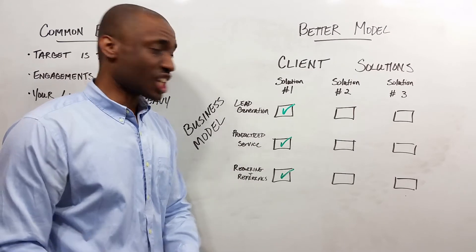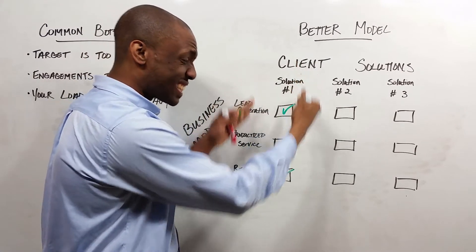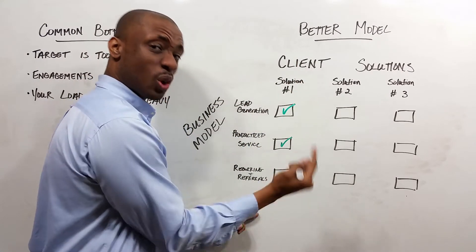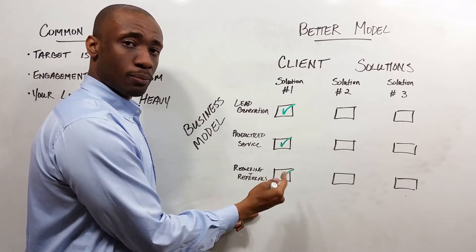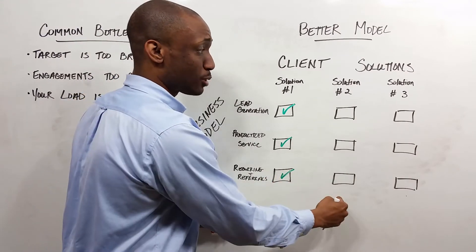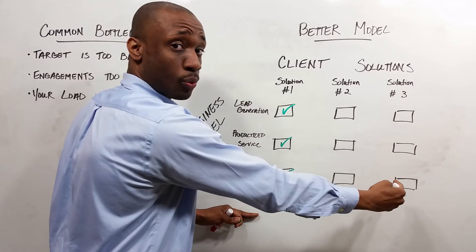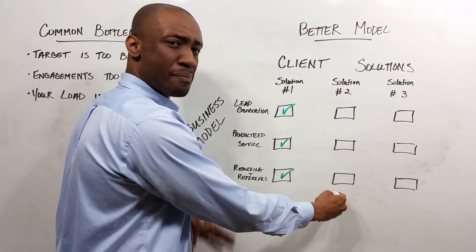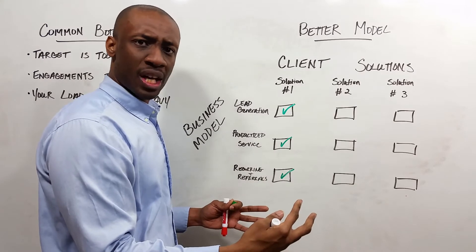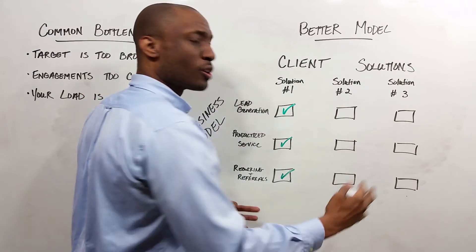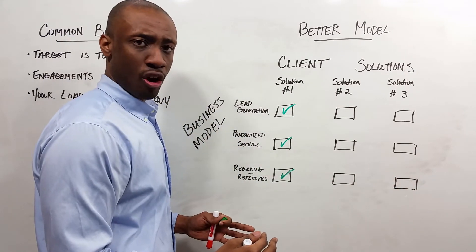Now, honest assessment. We know that we have a system in place for dealing with and delivering solution number one. So now we've got to make an honest assessment about these other things that we can do. Is there a second major high level thing that we offer? Is there a third major high level thing that we offer?